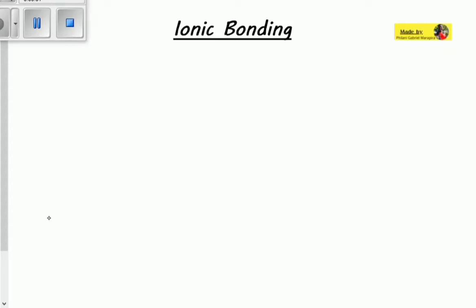Hey there, welcome to Educate. Today we're going to be talking about ionic bonding. Last time we talked about covalent bonding, whereby there's a sharing or interaction of valence electrons. Today we're going to be talking about ionic bonding — so what difference does it make in terms of ionic bonding comparing to covalent?